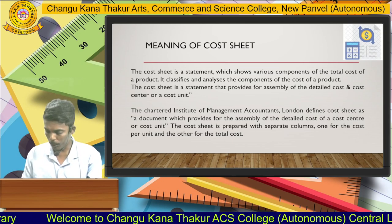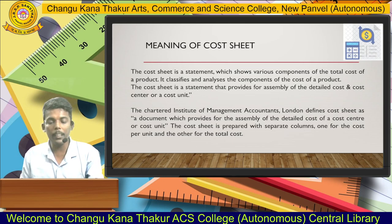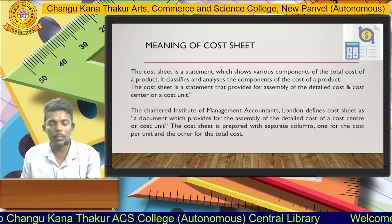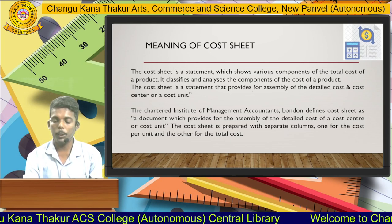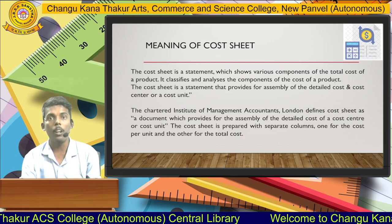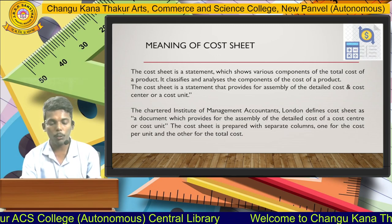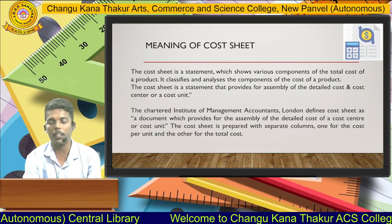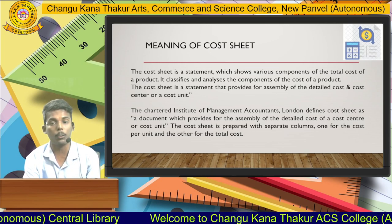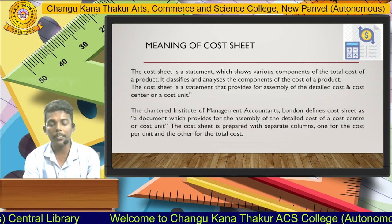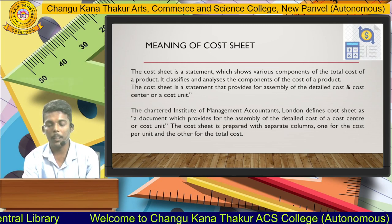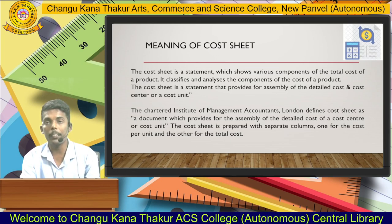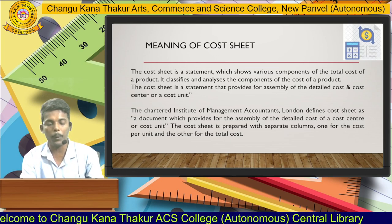First of all, we discuss the meaning of the cost sheet. Basically, the cost sheet is a statement where we show the various components of the total cost of a product. It classifies and analyses the components of the cost of a product. The cost sheet is a statement that provides the assembly and detail of the cost incurred for the purpose of production.